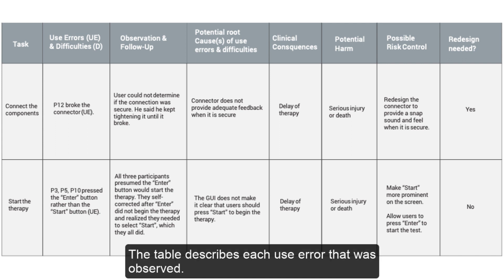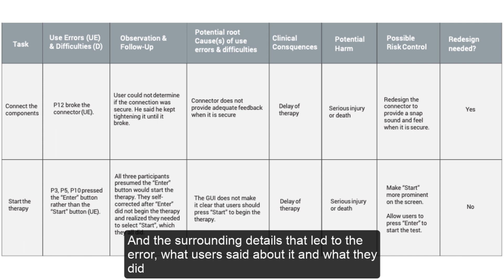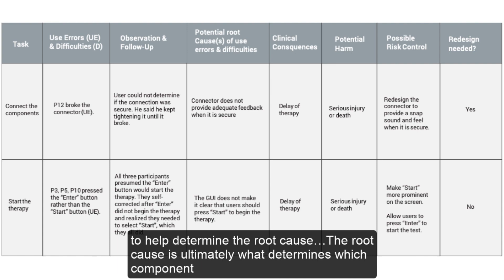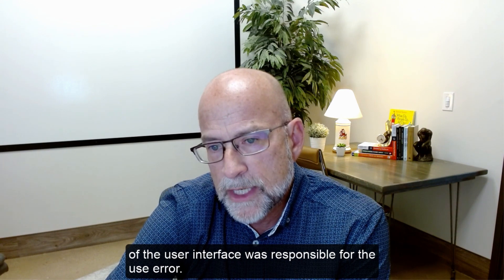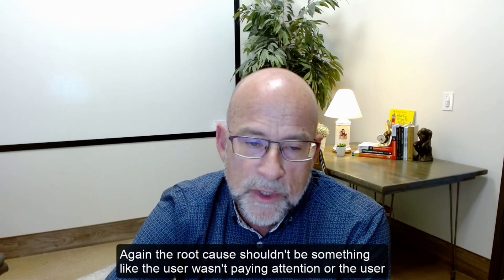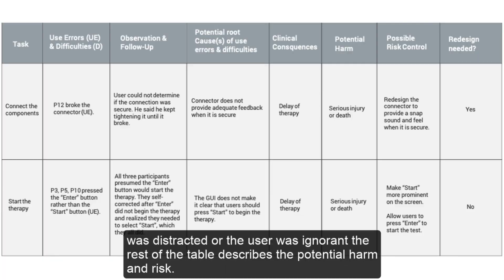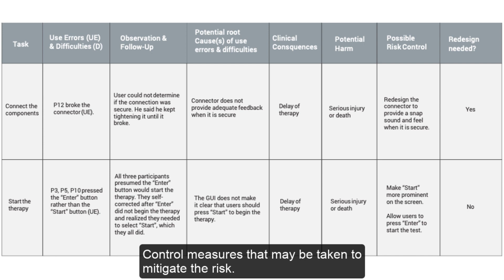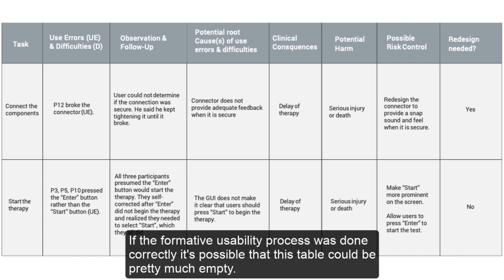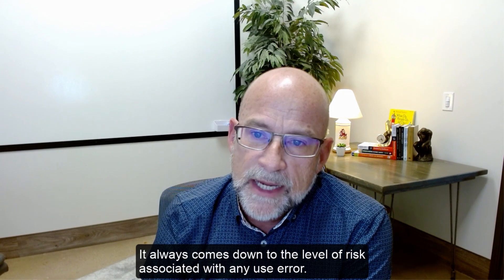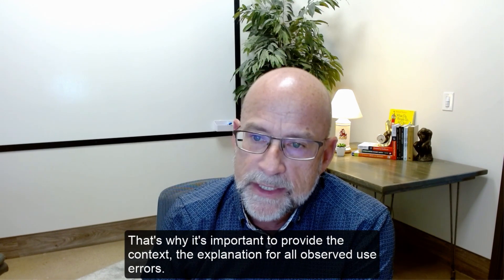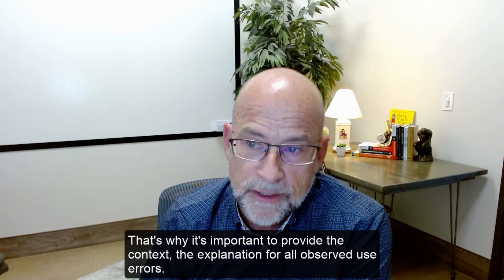Performance, knowledge, and qualitative data are analyzed and compiled in a detailed results table. The table describes each use error observed and the surrounding details — what users said and did — to help determine the root cause. The root cause determines which component of the user interface was responsible for the use error. The root cause should never be something like 'the user wasn't paying attention' or 'the user was ignorant.' The table also describes potential harm, risk, and control measures to mitigate the risk. If the formative usability process was done correctly, this table could be largely empty. However, a use error on a critical task doesn't necessarily mean the device cannot pass muster with the FDA — it always comes down to the level of risk associated with the use error.